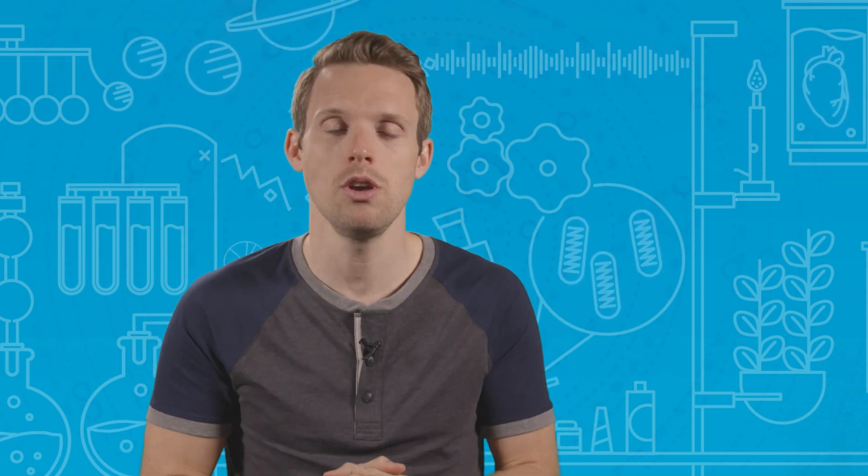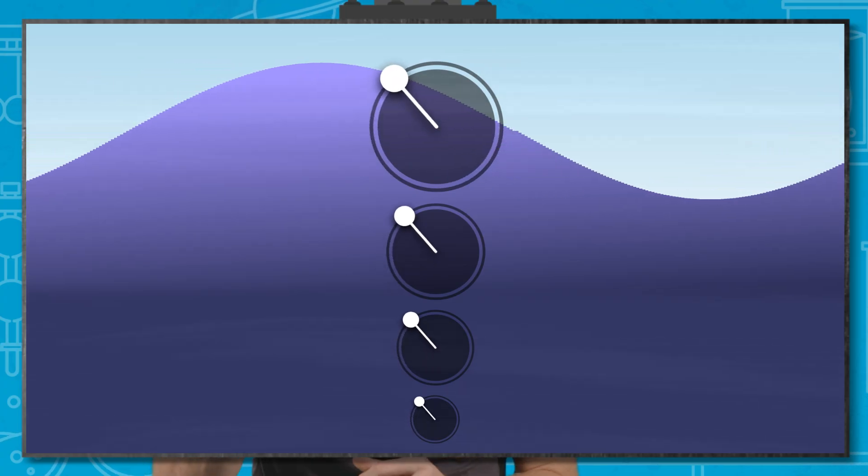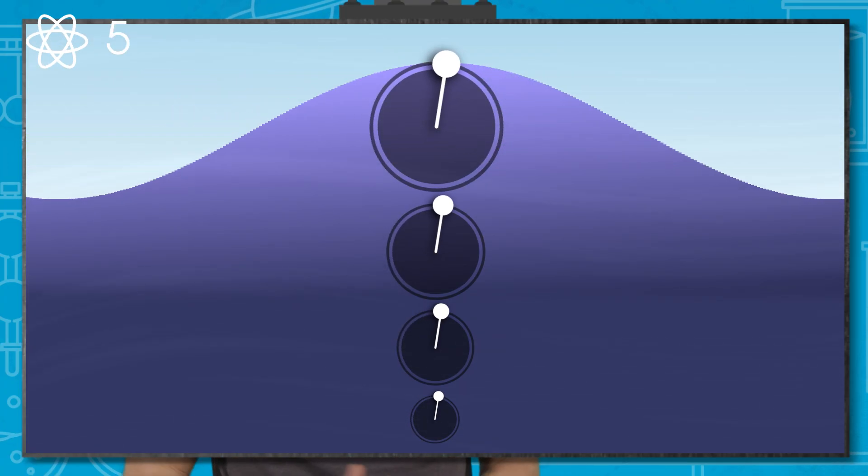Water beneath the surface is also affected by this movement. It's encouraged to go in its own small circles, diminishing in size as you go down increasingly deep.